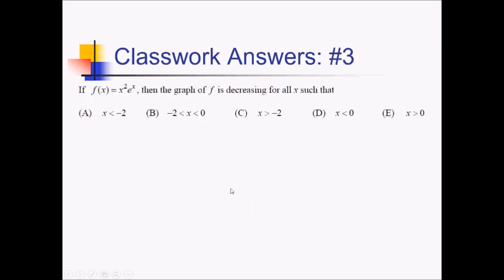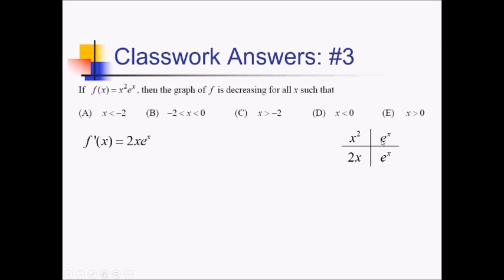On this problem, we're given the function x squared times e to the x, and we want to know where this function is decreasing. So we need to take the derivative and figure out where f' is negative. To do that, we are going to need the product rule. I've got factors of x squared and e to the x, and their derivatives are 2x and e to the x again. Multiplying back out, we've got 2xe to the x plus x squared e to the x.